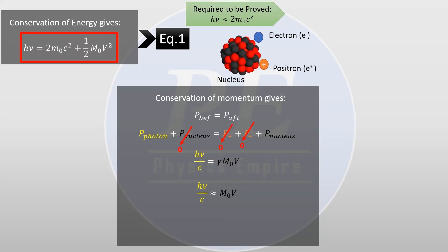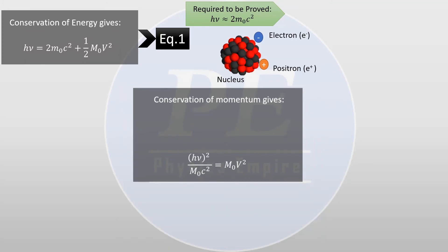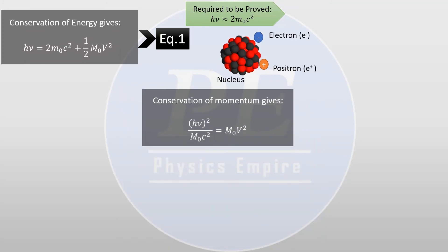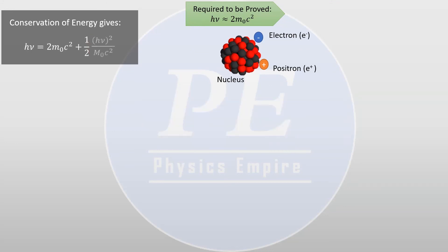Now squaring both sides, then dividing by M naught, we get the following result. Replacing our result in the equation, we get the following. Now using the assumption in the given, we can safely drop out the fraction of kinetic energy.